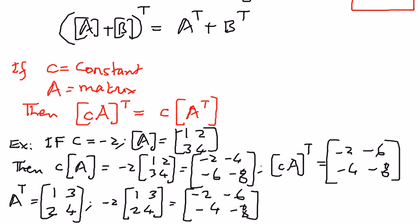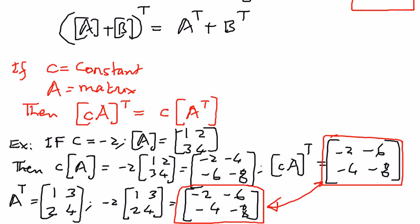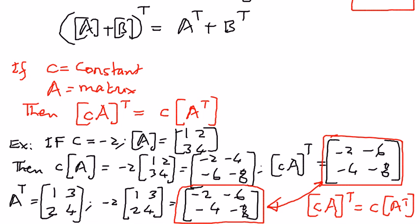These two results are exactly the same. Therefore, C times A, transposed, equals C times A transpose — confirming the property. This is how we apply and understand the properties of transpose of a matrix. In the next presentation, we shall look at more examples related to transpose of a matrix.